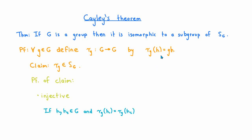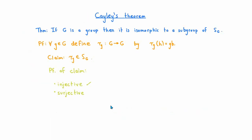By the definition of τ_g, that means g times h₁ equals g times h₂, and by the cancellation law in the group G, that implies h₁ equals h₂. That shows that for any g in G, the map τ_g is an injective map.